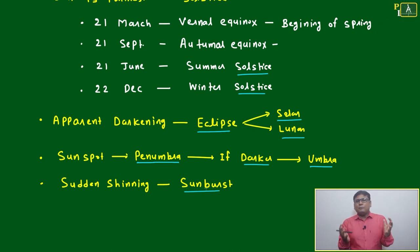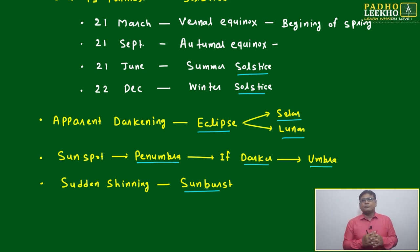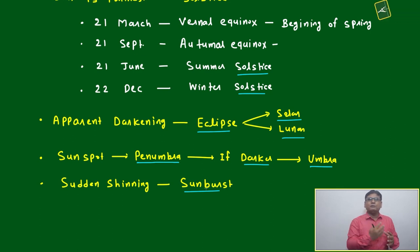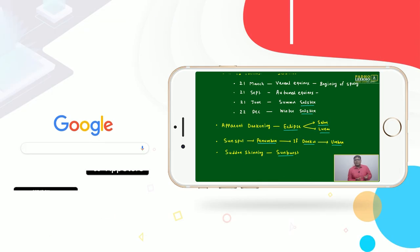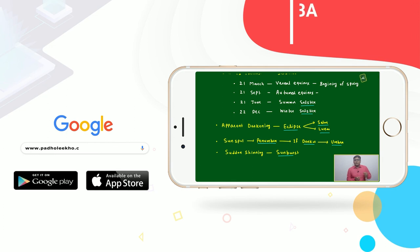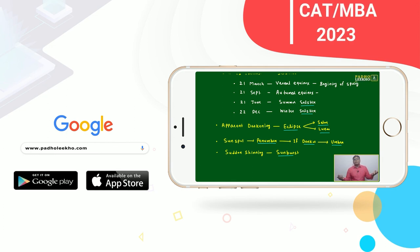A sudden shining of the sun is called a sunburst. For example, in the rainy season, clouds move around and suddenly all the clouds part and very intense sunlight comes through — that sudden intense sunlight is a sunburst.